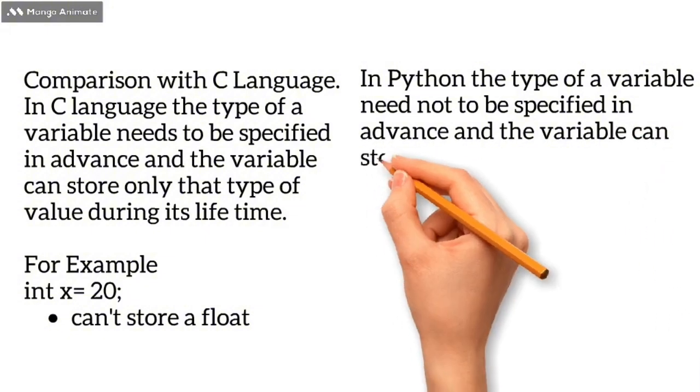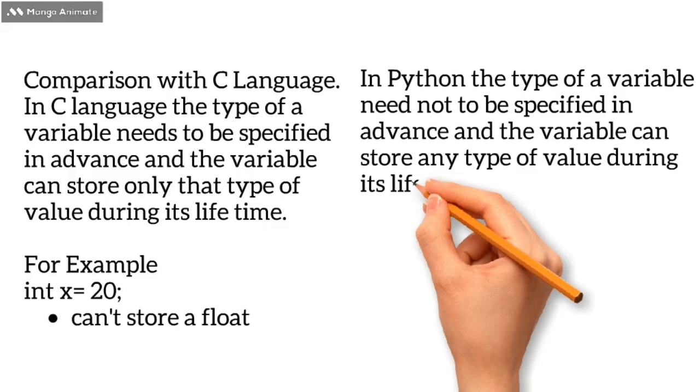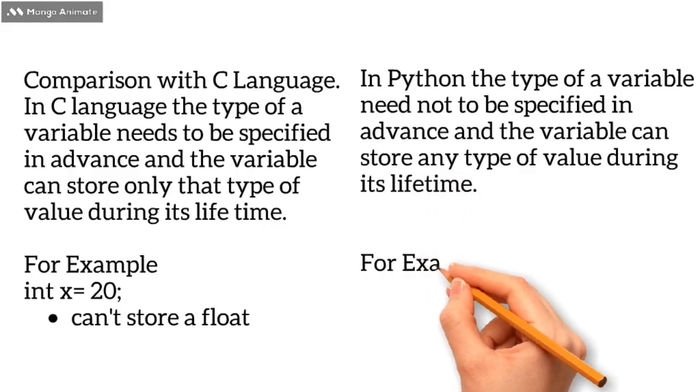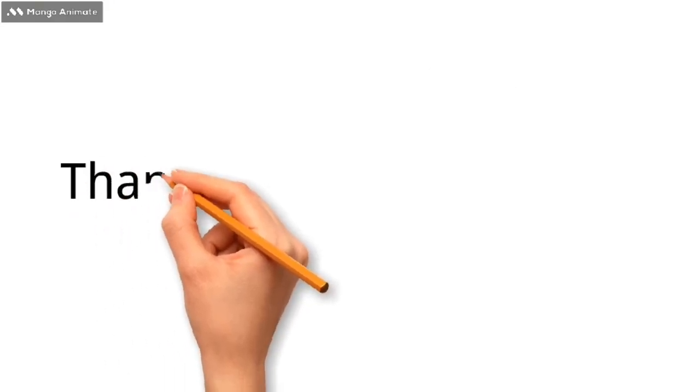In Python, we don't need to specify the variable type, and this is basically its advantage. If we want to store integer, we can store it. If we want to store floating point, we can store it. We don't need to declare the type. Both are allowed because the nature is dynamic.